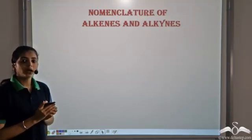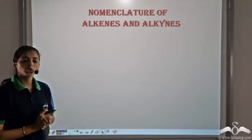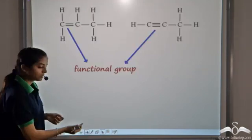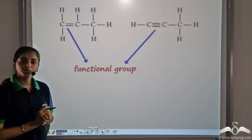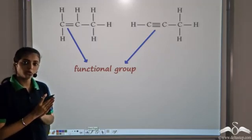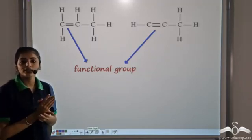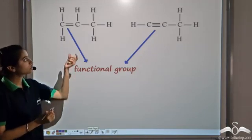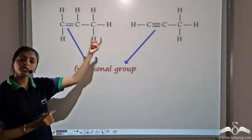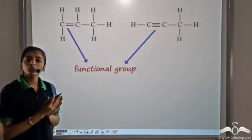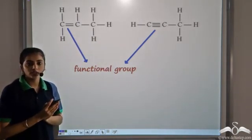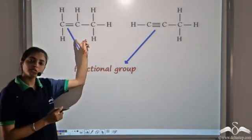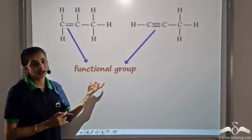We have seen the nomenclature of alkanes. Now let's look at the nomenclature of alkenes and alkynes. Alkenes are identified by the presence of a double covalent bond, and alkynes are identified by the presence of a triple covalent bond. The presence of a double bond and a triple bond gives some important properties to these organic compounds, so these groups — the double bond and triple bond — are known as functional groups.